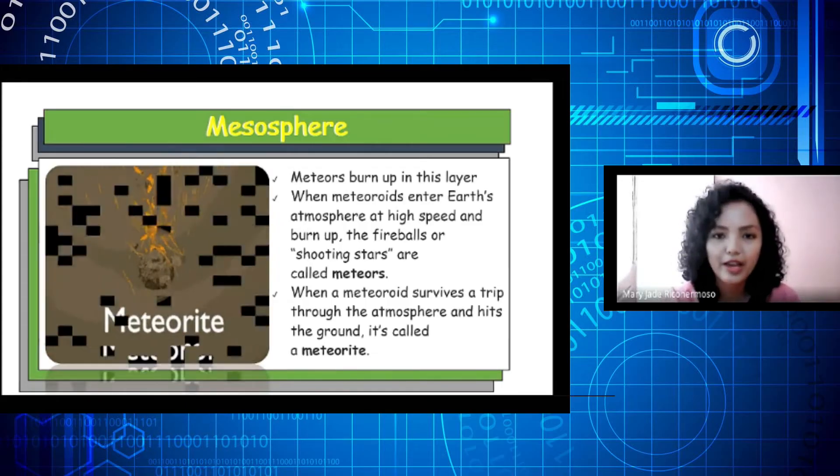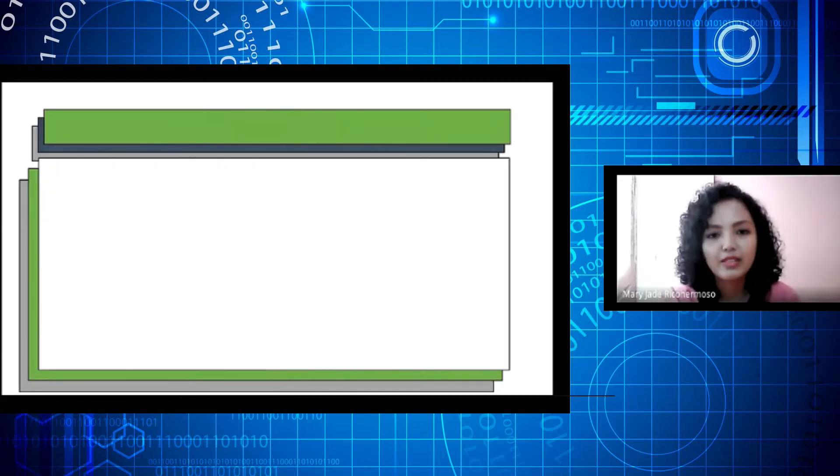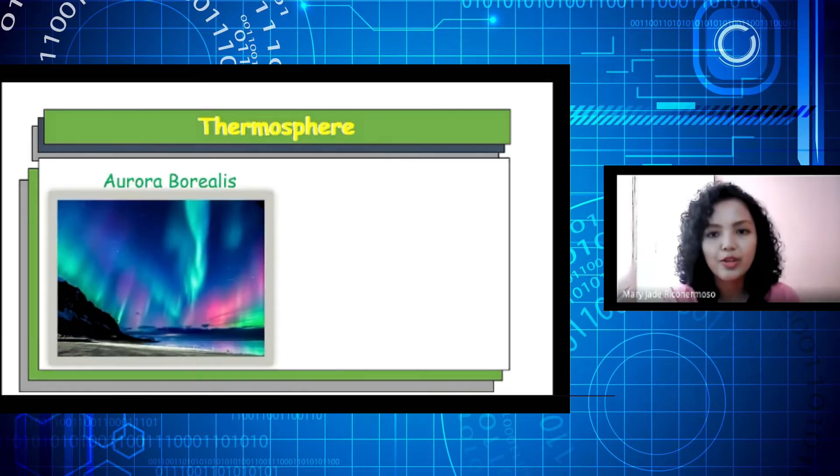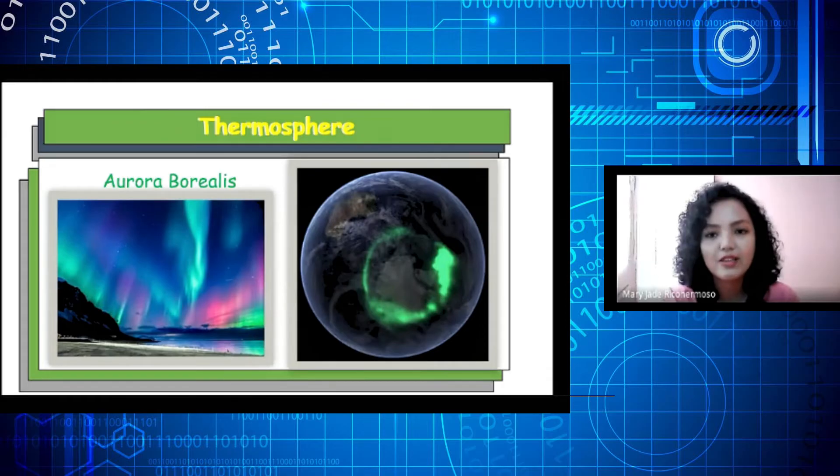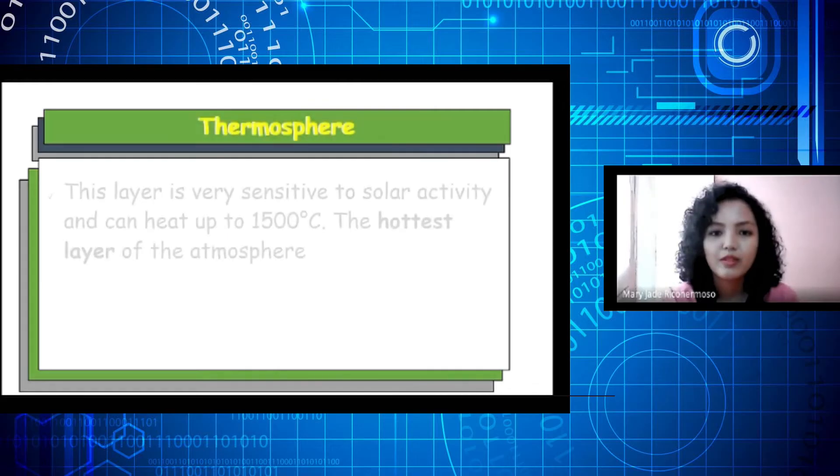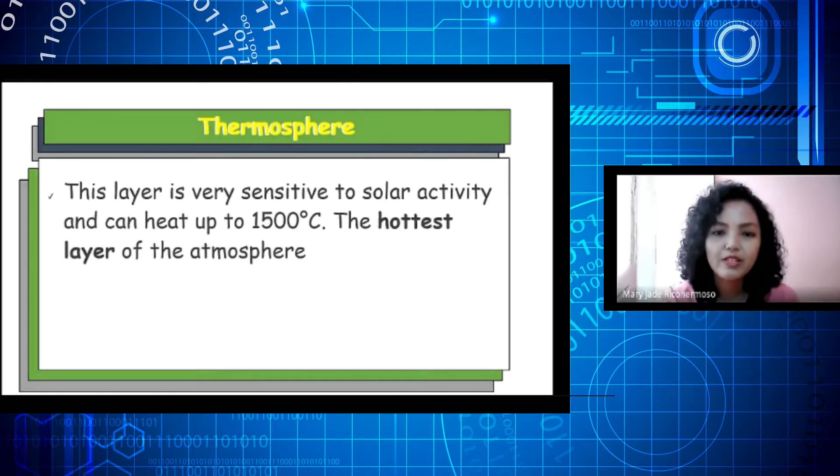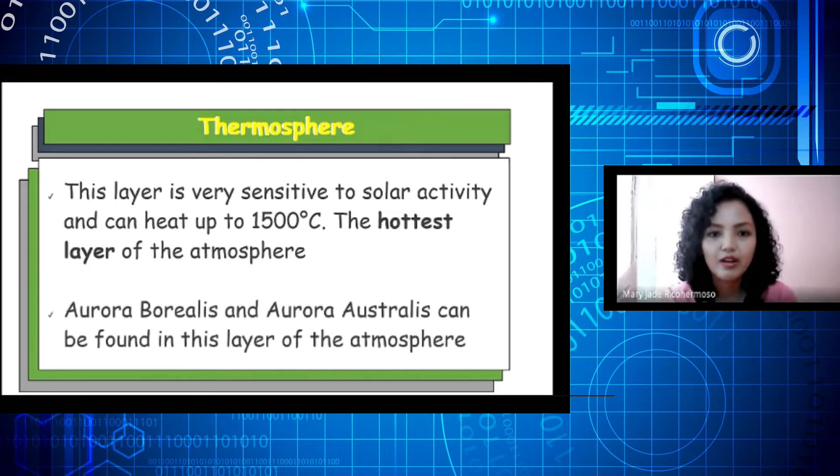The next layer is the thermosphere. The famous aurora borealis, or what we call the northern lights, mostly occur in the thermosphere. This layer is very sensitive to solar activity and can heat up to 1500 degrees Celsius. This is the hottest layer of the atmosphere. The aurora borealis and aurora australis can be found in this layer of the atmosphere.